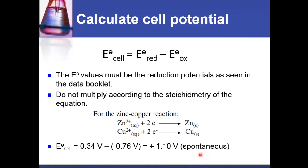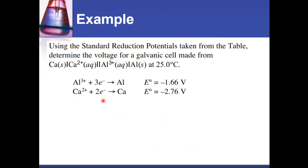Here's an example for you to try. If you make a voltaic cell from these two half cells, calculate the cell potential. Determine which half cell will be oxidized, which will be reduced, and then use the equation from the previous slide to calculate the overall cell potential.